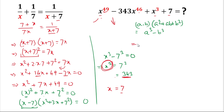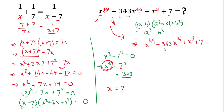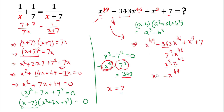Looking at the expression x⁴⁹ − 343·x⁴⁶ + x³ + 7, we substitute 343 = 7³ = x³. So 343·x⁴⁶ becomes x³·x⁴⁶. Since the base is x and the exponents add, x³·x⁴⁶ = x⁴⁹. The expression becomes x⁴⁹ − x⁴⁹ + x³ + 7.